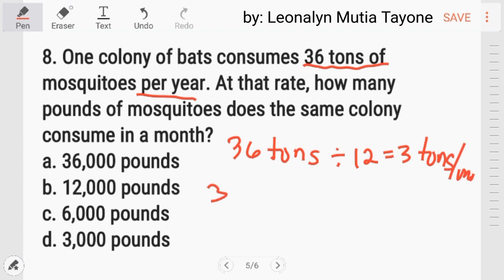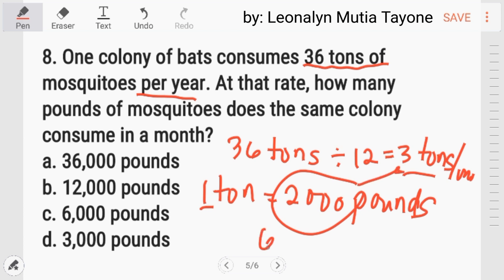Itong si three tons, ang first, one ton is equivalent to two thousand pounds. So, one ton, three tons man. So, two thousand times three, the answer is six thousand pounds. Letter C.